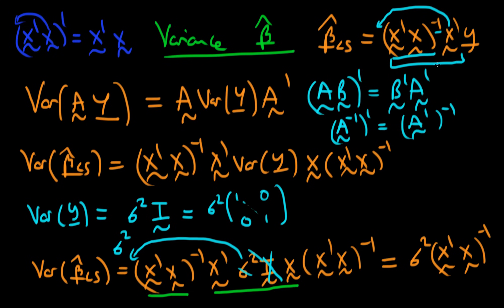That is the expression for the variance of the least squares estimator under the assumption that we have no serial correlation of errors and homoscedastic errors. In the next video we are going to start to prove the Gauss-Markov theorem in matrix form. I'll see you then.